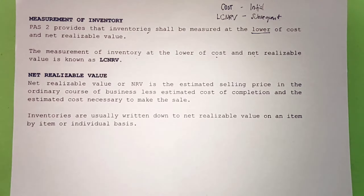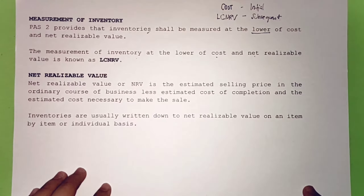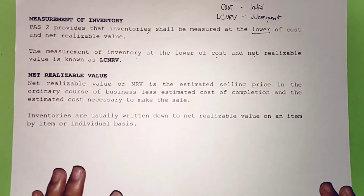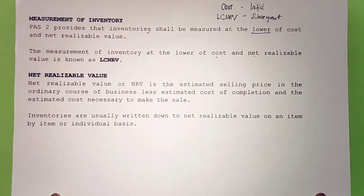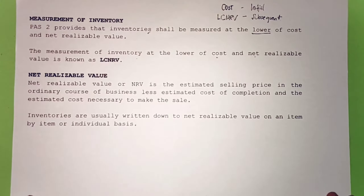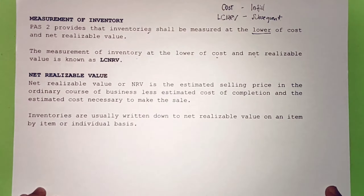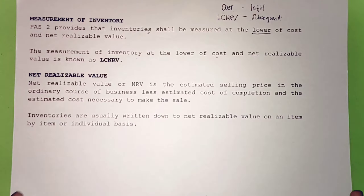You already used conservatism back in basic accounting, and also in the topic of cash and cash equivalents. For example, when money is deposited in a bank that is in bankruptcy, the cash deposited in that bank should be written down to its estimated realizable value — that is an application of the conservatism principle.